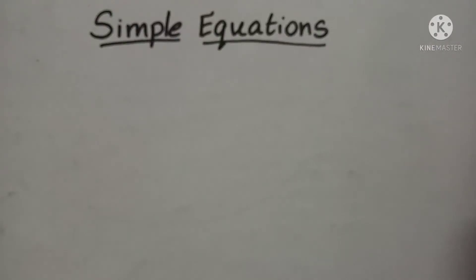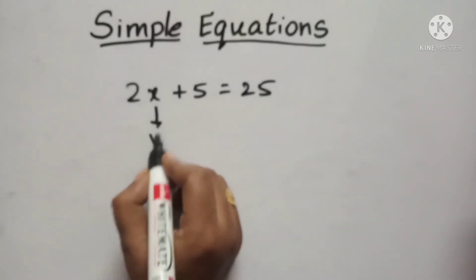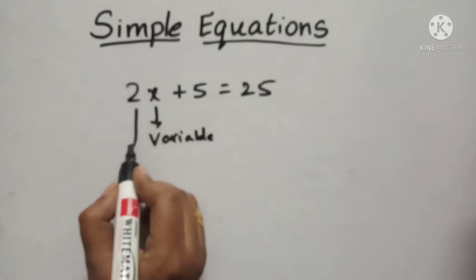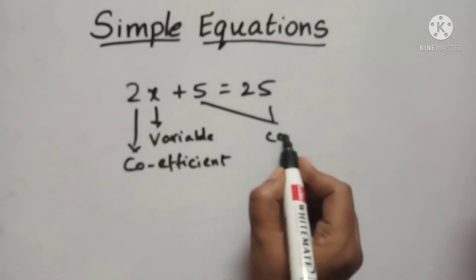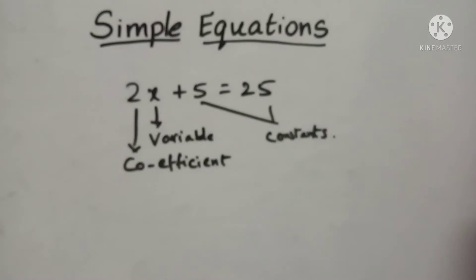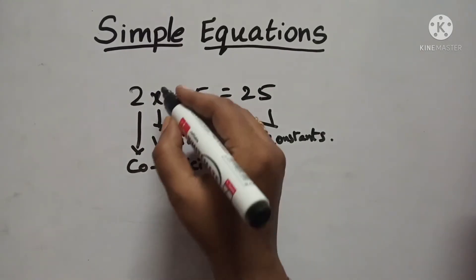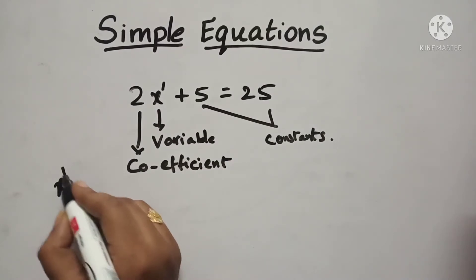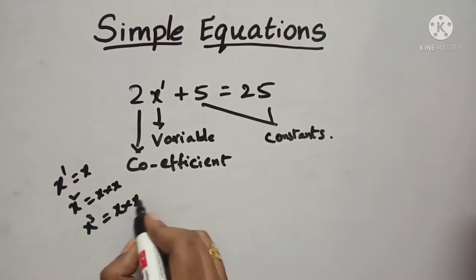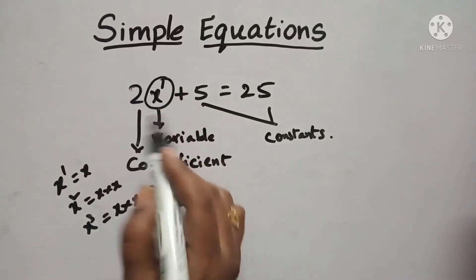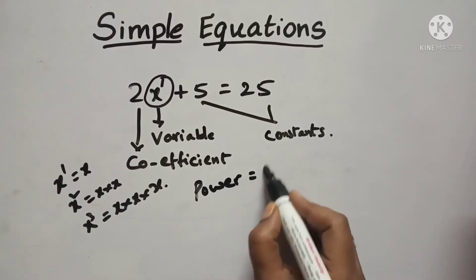In the equation 2x plus 5 is equal to 25: X is called the variable, 2 is called the coefficient, and 5 and 25 are called Constants. Here, X is having a power of 1. X power 1 is X, X square is X into X, X cube is X into X into X. The power is also called the exponent.